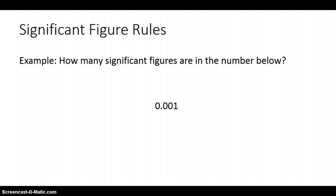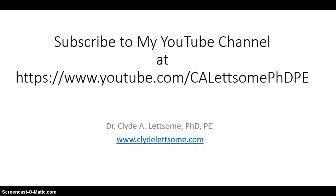How about this next number — how many significant figures does it have? There is only one significant figure. Rule number five applies here: all zeros to the left of the leftmost non-zero number — the one — are not significant. So there is only one significant figure in this number.